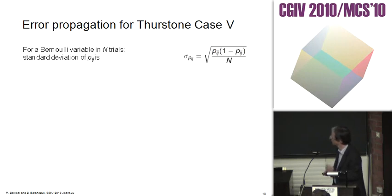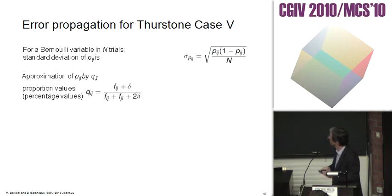We go back to Thurston case 5. We start from the statistics, from a Bernoulli variable with N trials. The standard deviation of P is then square root of P_ij times (1 minus P_ij) over N, taking the square root. Now we approximate P by Q, and the error is just by substitution. The error of Q_ij is given by this formula.